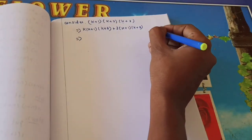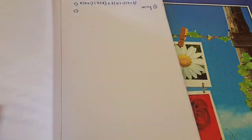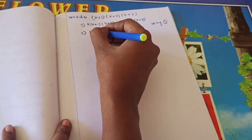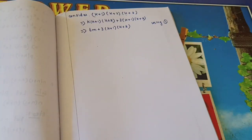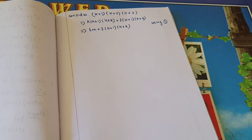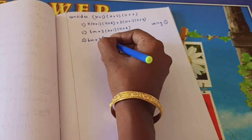Using equation 1, substitute k(k+1)(k+2) equals 6m. So we get: 6m plus 3(k+1)(k+2). The second term 3(k+1)(k+2) will always be even. For example, if k equals 1: 3 times 2 times 3 equals 18, which is divisible by 6. Whether k is odd or even, the second term is always even.